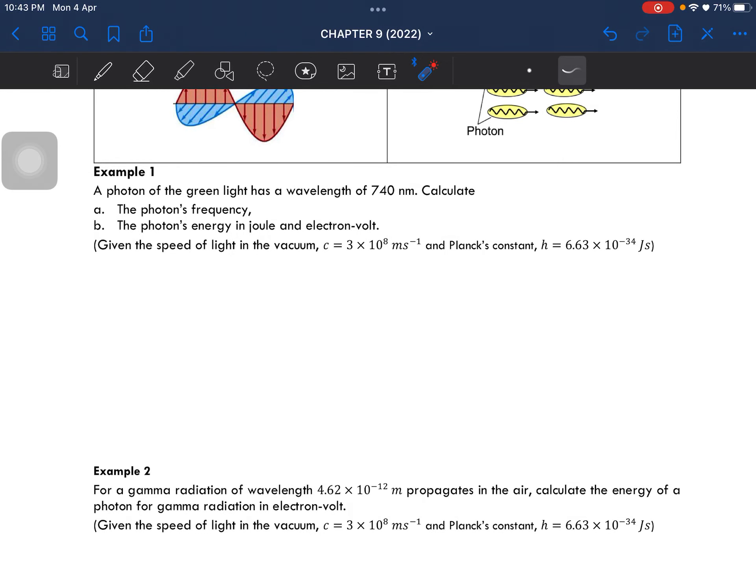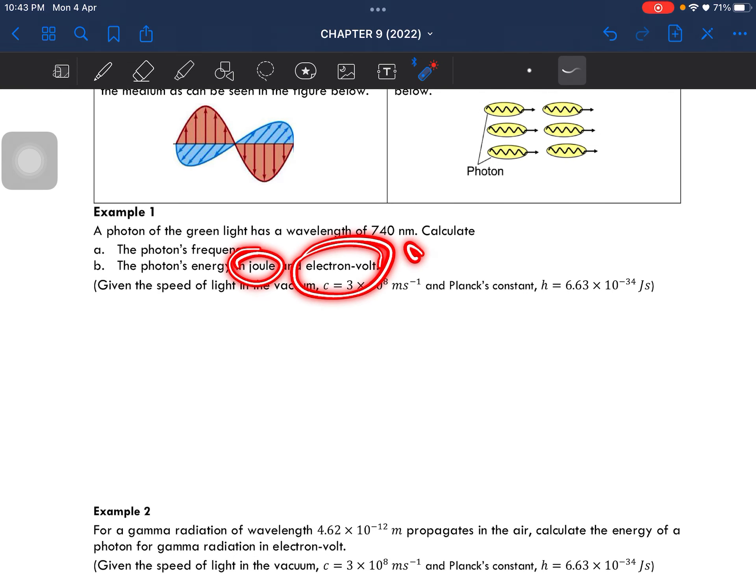Example number one: a photon of the green light has a wavelength of 740 nanometers. So we have to calculate the photon's frequency as well as the energy in both joules and electron volts.